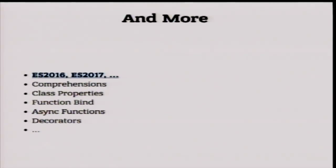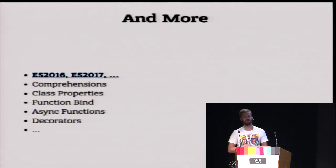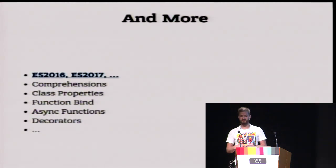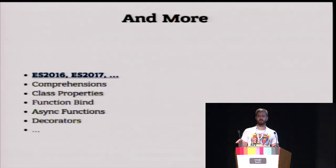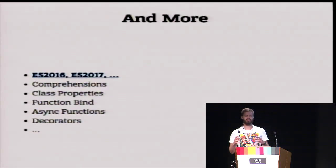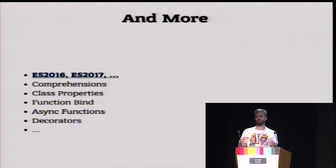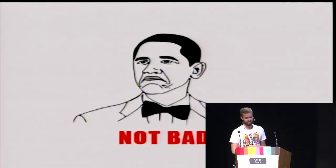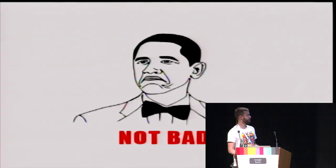In ES2016 maybe there would be comprehensions, class properties, function bind — features like we have in Python 3.5. So JavaScript is not staying in place. Corporations and companies around the world are willing to develop better JavaScript. Not bad.